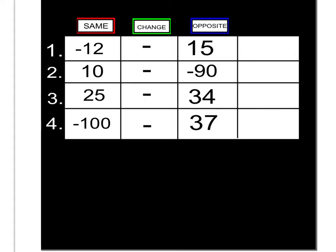So here are four subtraction examples. I want you to pause, try to do the four, and then turn me back on to see if you got the correct answers. So I know that I have to change all of these to an addition sign, and I'm taking the opposite of all these numbers in the third column. The opposite of 15 is negative 15, opposite of negative 90 is positive 90, opposite of 34 is negative 34, and opposite of 37 is negative 37.